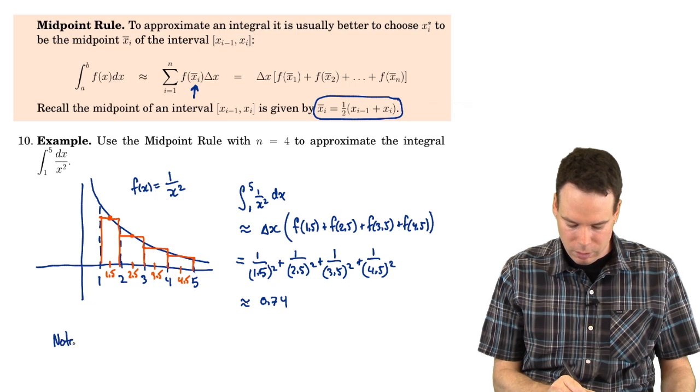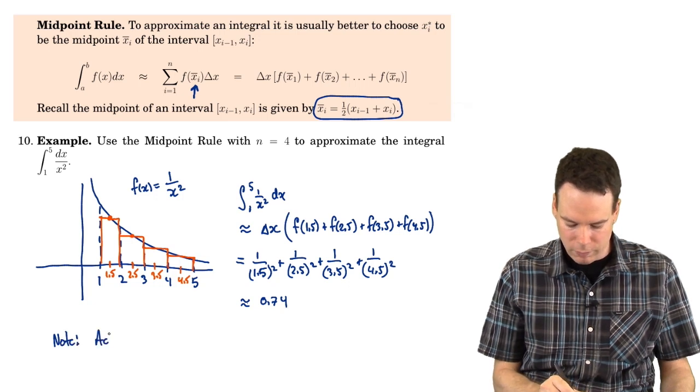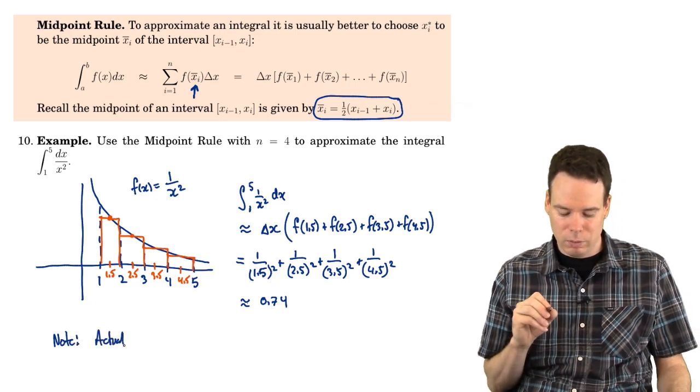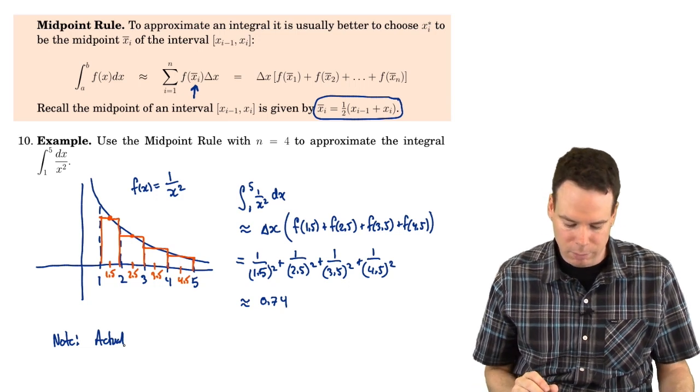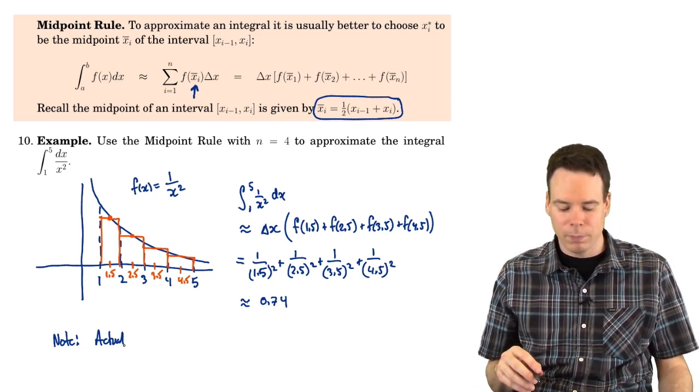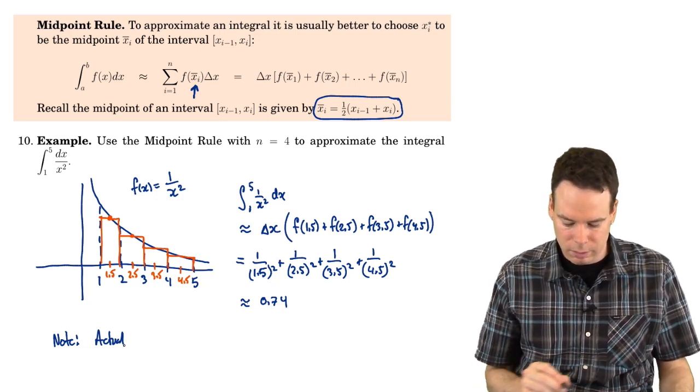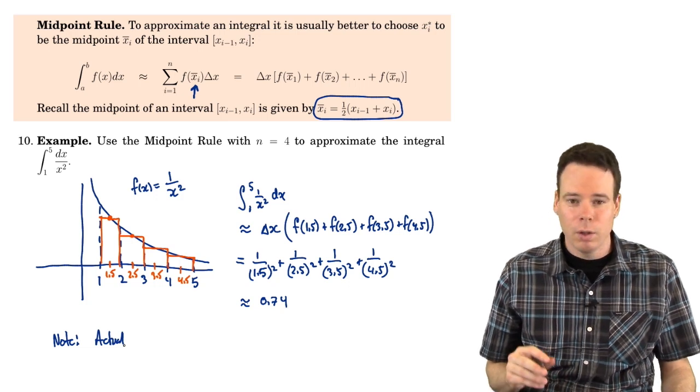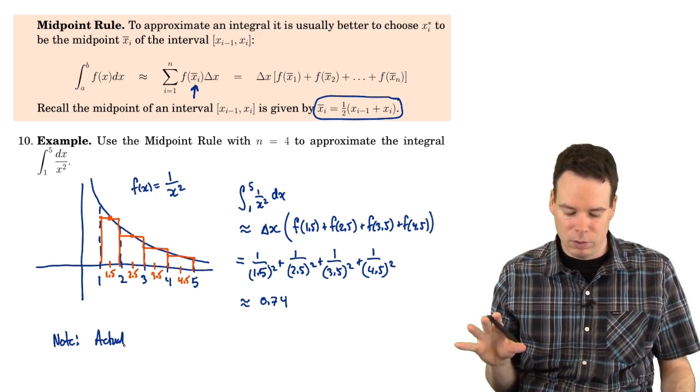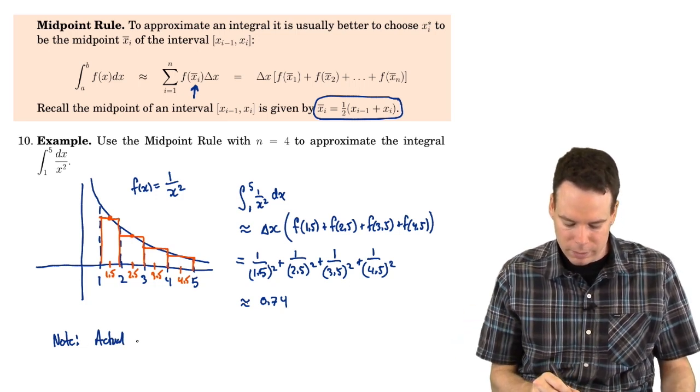Now one thing to note here is that the actual value, which we can't compute as of yet unless we do a limit of the corresponding Riemann sum, which in this case still is a little bit more challenging. We'll see later on that we have quicker methods for doing this. What is the actual value?